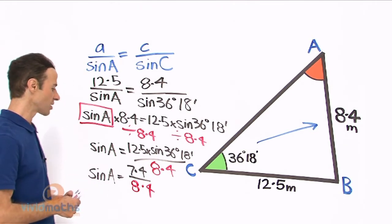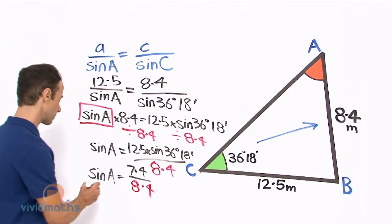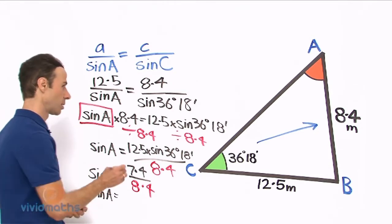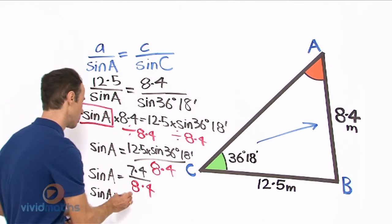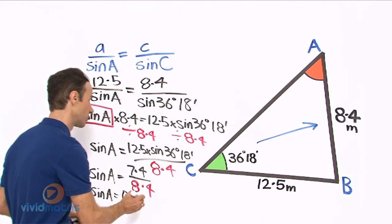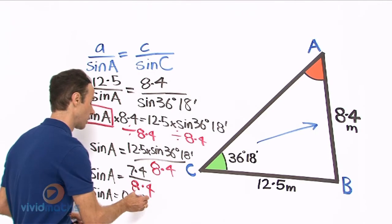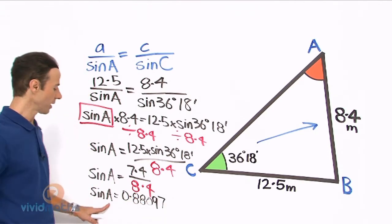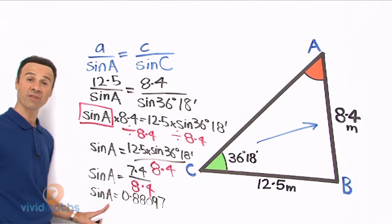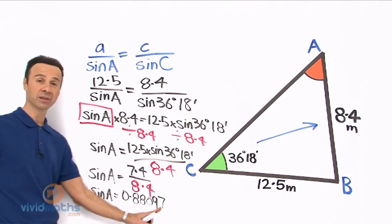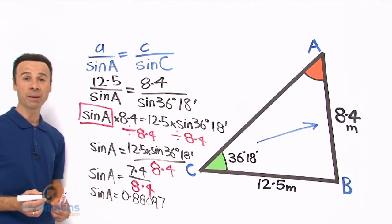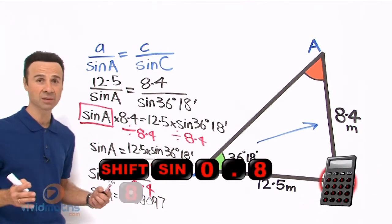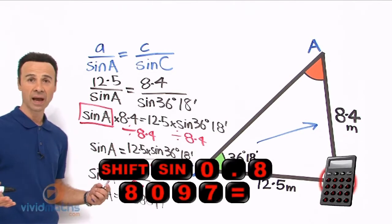Now what do we do in this situation when we have a sine a equaling a big decimal like that? We are going to get the a by itself, so we go in the calculator: shift a, or inverse a, second shift a, whatever you have in your calculator.